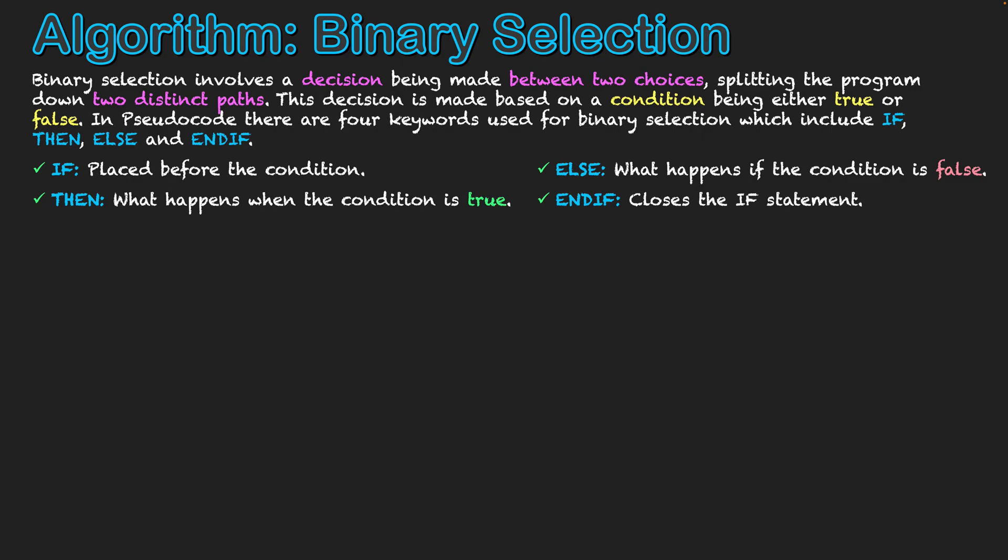And then finally, we have endif, which closes off the if statement. So those four words are used in conjunction in order to do binary selection within an algorithm.